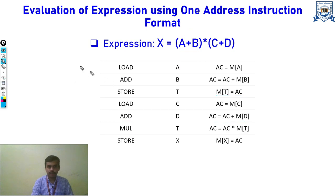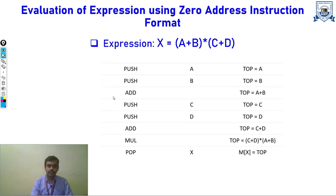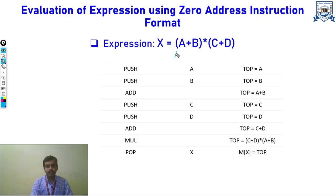Now, the 0-address instruction format. In this format there is no address field — we use a stack. For stack-based computation we must use Reverse Polish Notation, that is postfix. So we convert the expression to postfix: A B plus C D plus multiply.